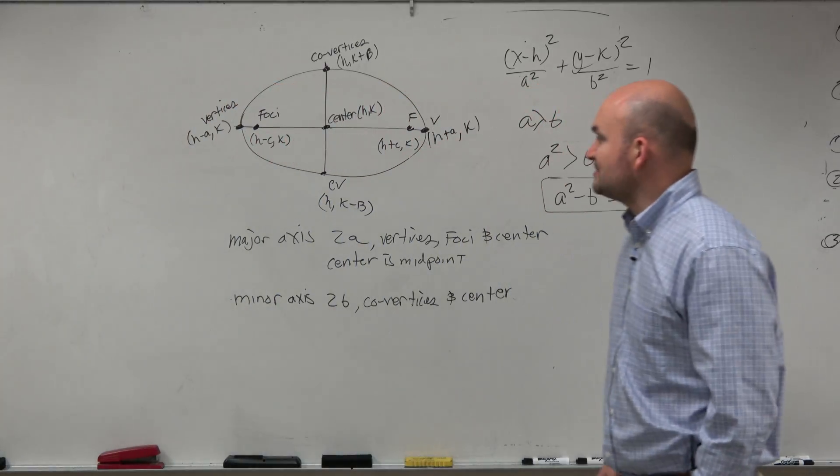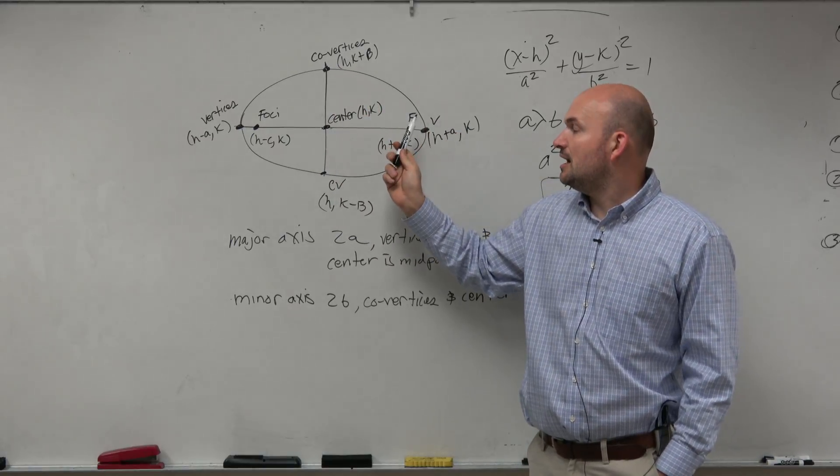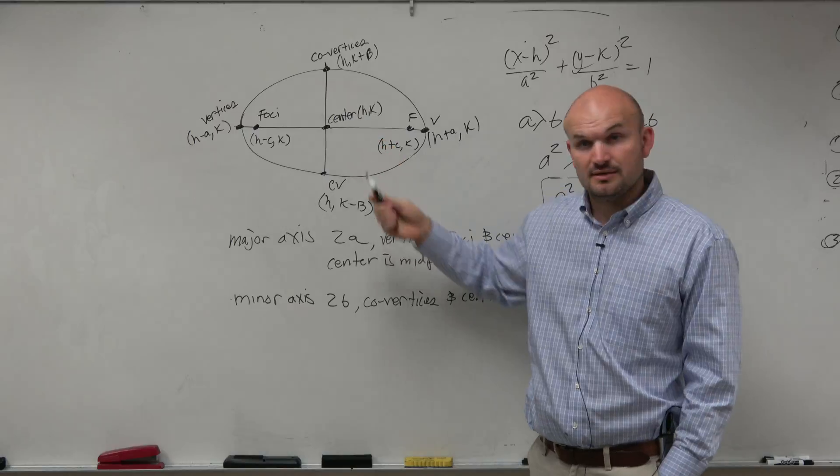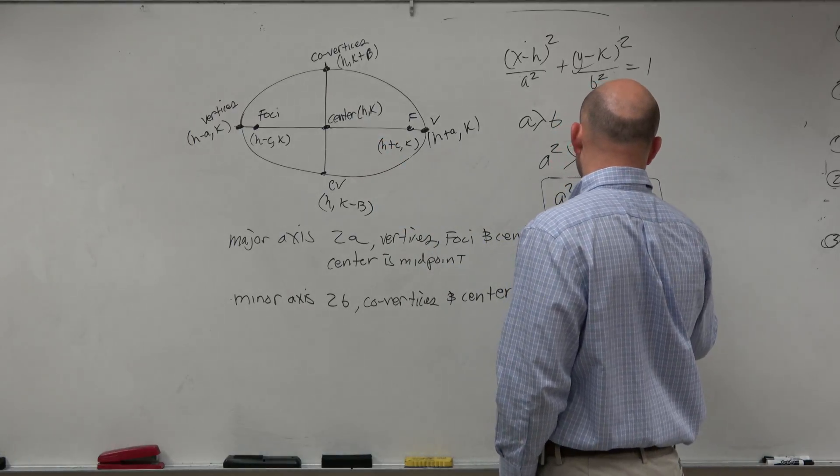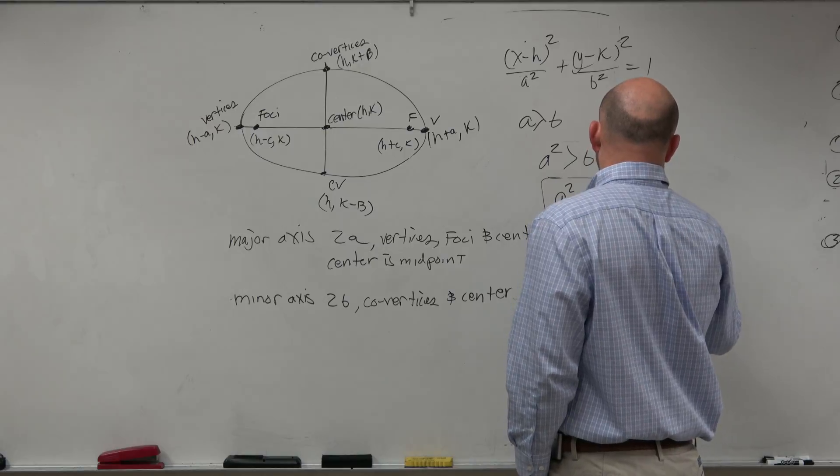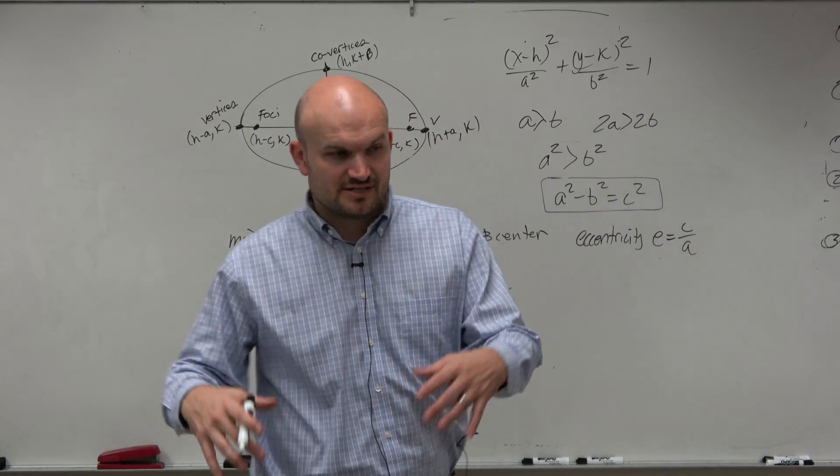Last thing I will talk about is also notice that the major and the minor axis cross at the center. Right? And then last but not least, let's talk about eccentricity. E equals c over a. So eccentricity. If you guys remember from last class period.